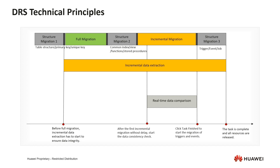The fourth stage is the incremental migration stage, which has two parts. Part one is to replay the incremental data that DRS cached during the full migration — at this point, DRS tasks are in the incremental central stage with a certain delay. Once the full migration incremental data is replayed and synchronized completely, the second part of incremental begins. This is the real-time synchronization of incremental data — at this point, DRS tasks are in the incremental synchronization state and the delay is usually within a small range. In theory, the source and target database data are completely the same, so we can start a data comparison task.